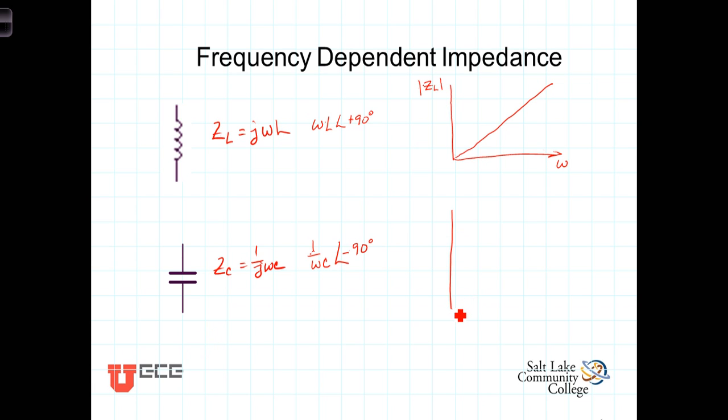Again, we can graph the magnitude of the impedance as a function of frequency, magnitude of Z sub C, and it dies off as one over omega. As omega approaches zero, the magnitude of the impedance goes to infinity. As the frequency approaches infinity, the magnitude of the impedance goes to zero.